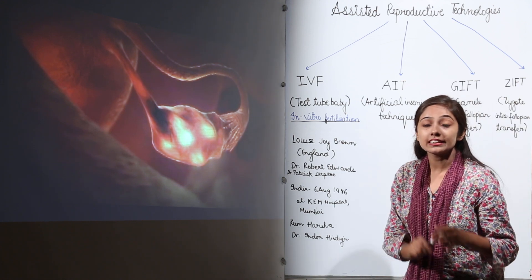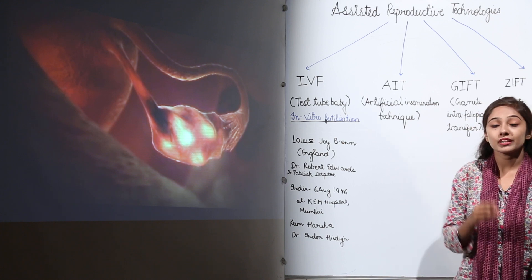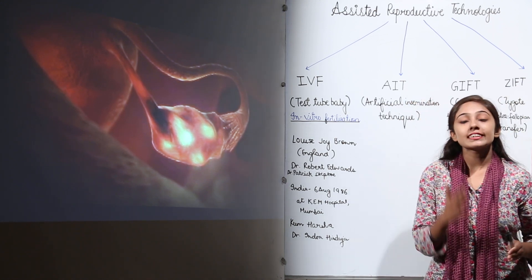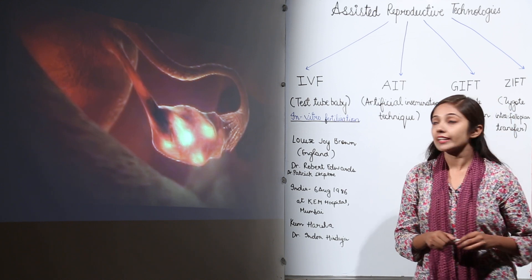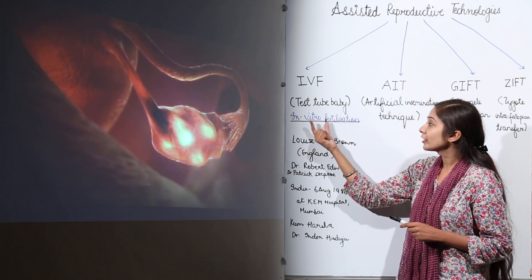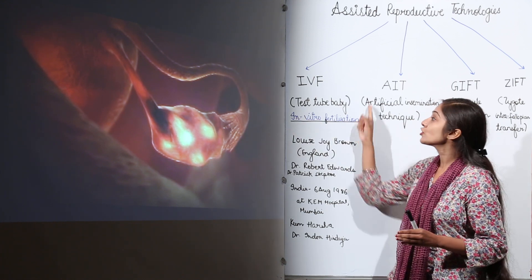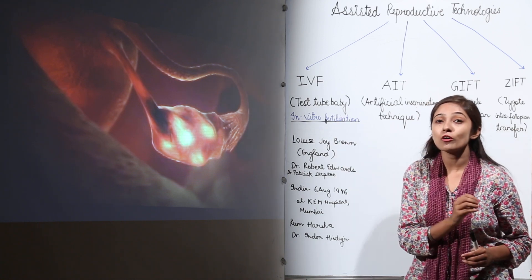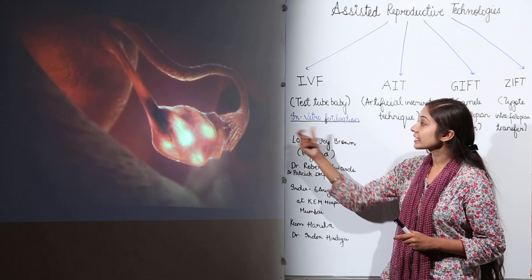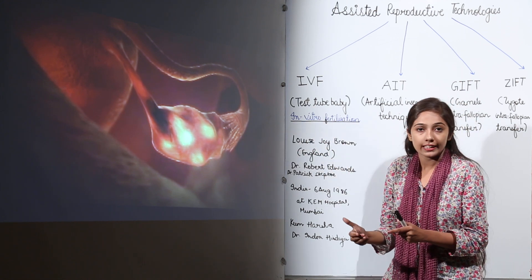These assisted reproductive technologies can help a couple have a normal child. The first technology we'll discuss is IVF, that is in vitro fertilization. By this technique we can have test tube babies — you must have heard this name. Test tube babies are produced by in vitro fertilization.